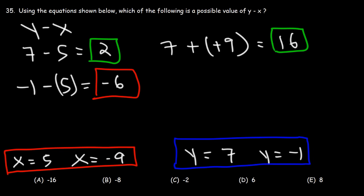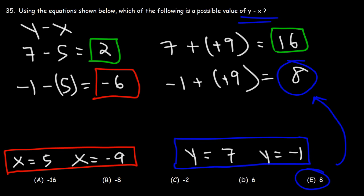Or, when y is negative 1, x can be negative 9. Negative 1 minus negative 9 is the same as negative 1 plus 9, which is 8. So this one is the one that's listed. Therefore, E is a possible value of y minus x.